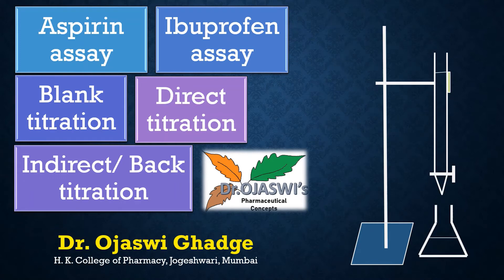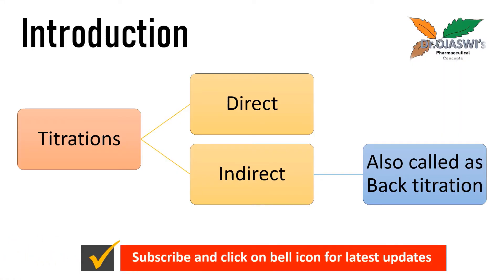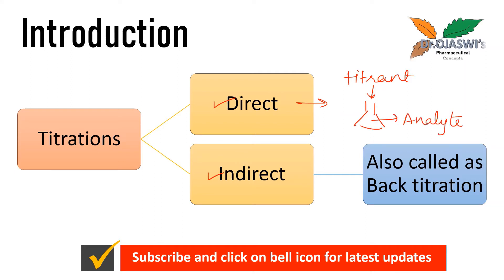Hello everyone, welcome to my channel Pharmaceutical Concepts. Today let us understand the concept of back titration. There are two general types of titrations: direct titration and indirect titration. In direct titrations, the titrant present in the burette is added to the analyte present in the conical flask, and there is a reaction occurring between them until the reaction goes to completion.